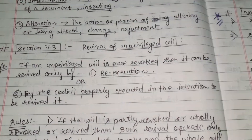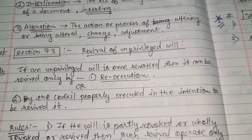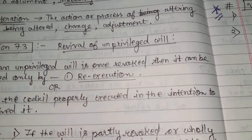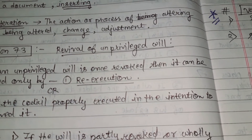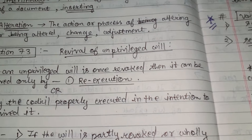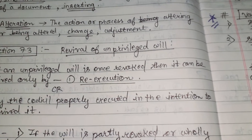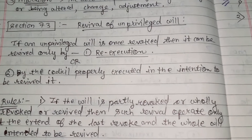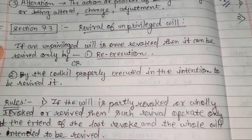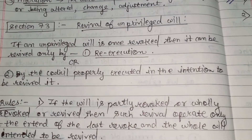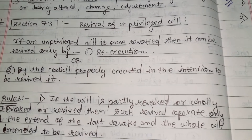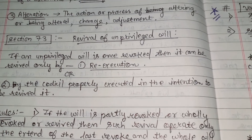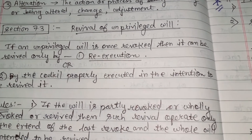Section 73 is about the revival of an unprivileged will. An unprivileged will is one that is not a privileged will. If an unprivileged will is once revoked, it can be revived only by re-execution or by a codicil properly executed with the intention to revive it.